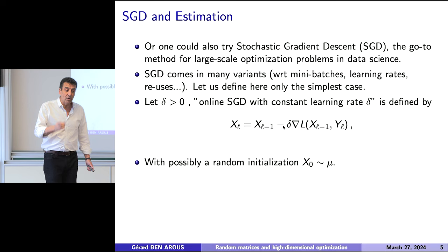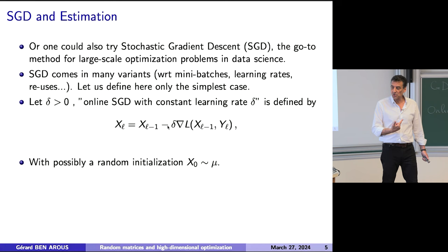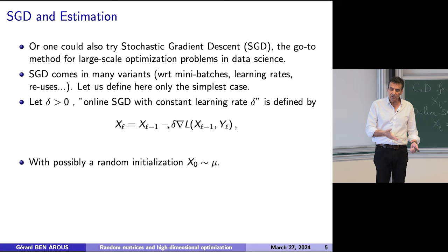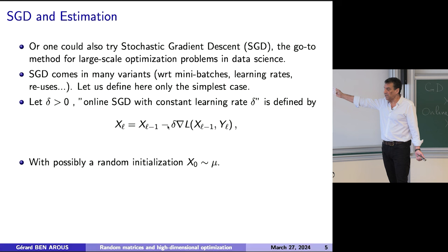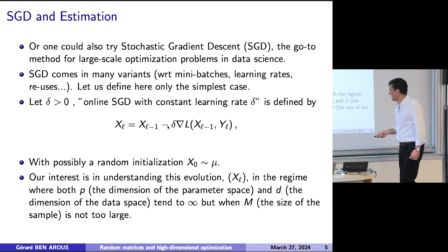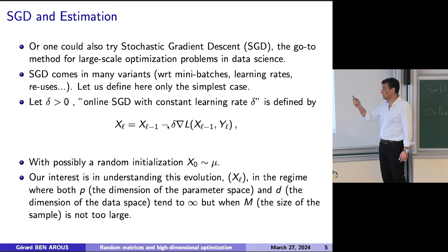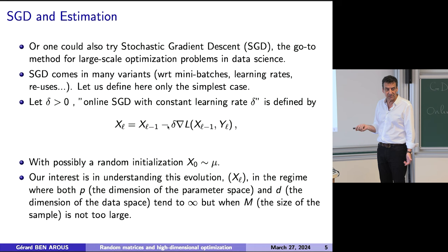What you don't want to do in statistics is what computer scientists or mathematicians will want to control, which is to start from the worst possible thing. You don't want your system to fail. The only thing you have to beat here is the fact that you don't know anything, so you start randomly. What you want to understand is the evolution in the region where both the dimension of the parameter space and the dimension of the data space are large, but m, the size of the sample, is not too large. That's what I discussed yesterday.